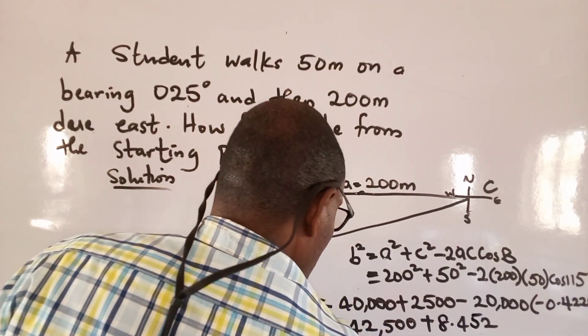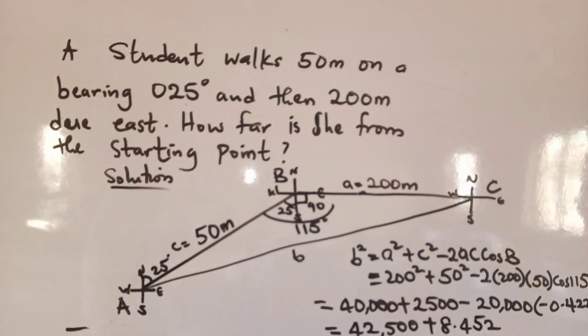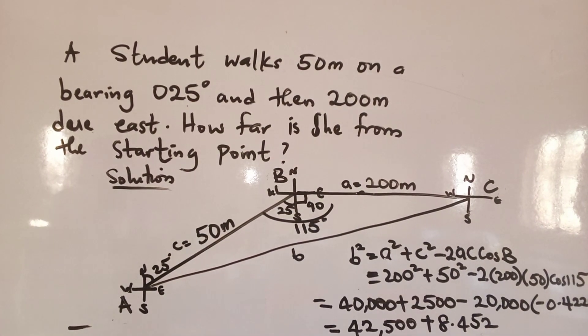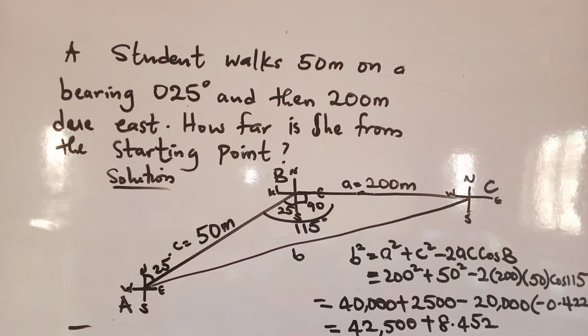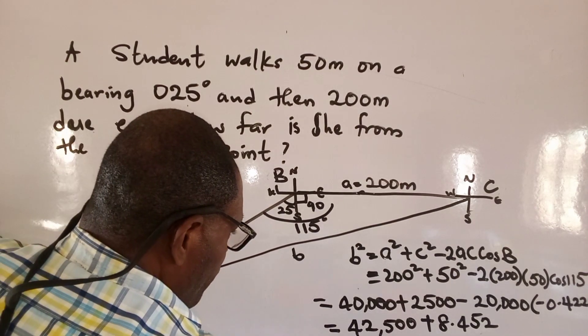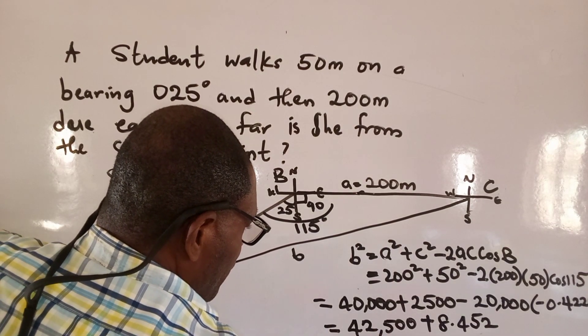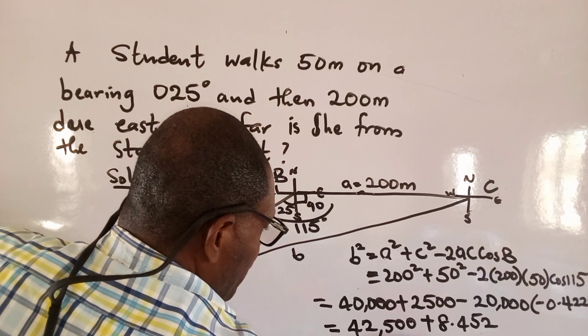So add them together. What would that give me? To give me about 50,952. Then this is our b².